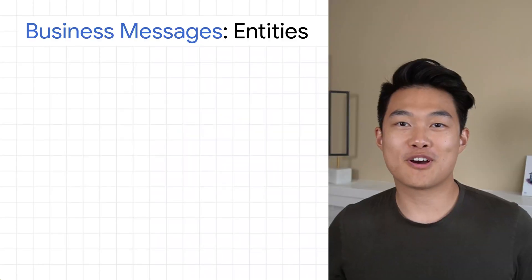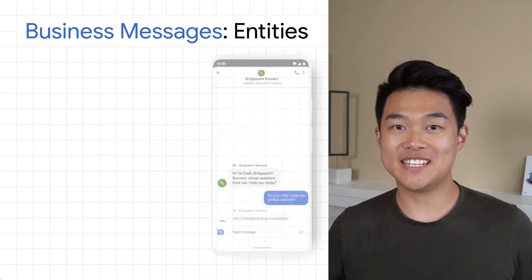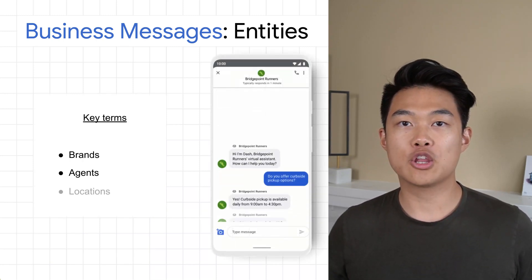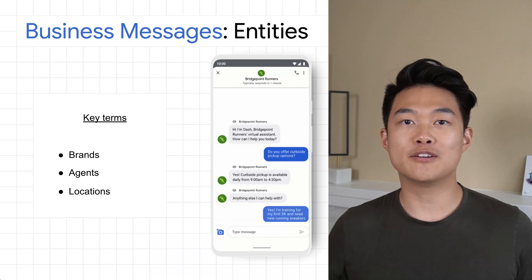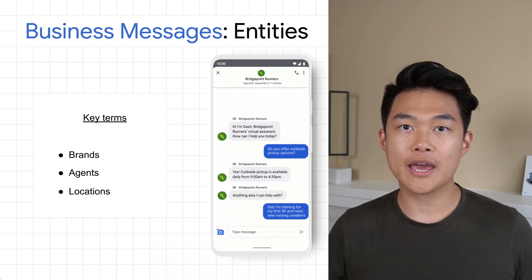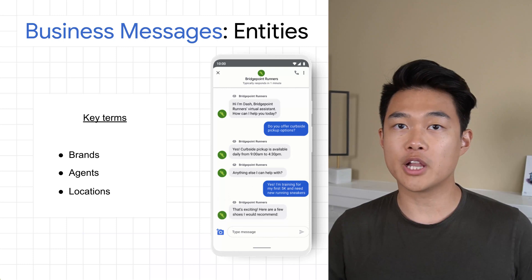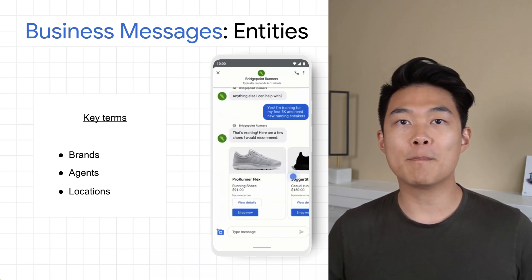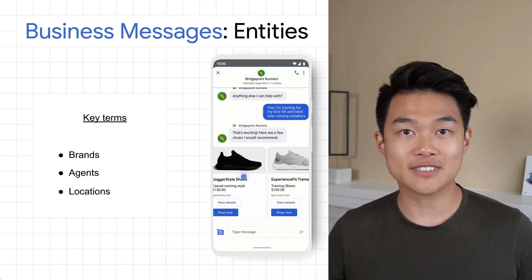Business messages conversations are made up of three key entities. The brand, the agent, and the location are entities that you create and configure either through the business communications API or the business communications developer console. They are what make up the agent's appearance and control certain behaviors.